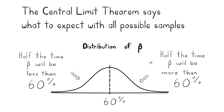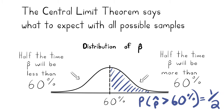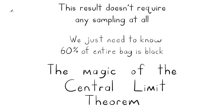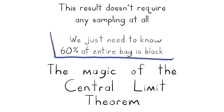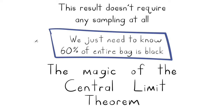We could say half the time P-hat will be more than 60 percent for this bag of marbles: the probability of getting a P-hat more than 60 percent is one half. What's really nice about the central limit theorem is that it allows us to talk about all possible samples without doing any sampling at all. When we know 60 percent of the entire bag is black, we know the probability that the sample proportion exceeds 60 percent is one half — without any sampling. That's a beautiful result.